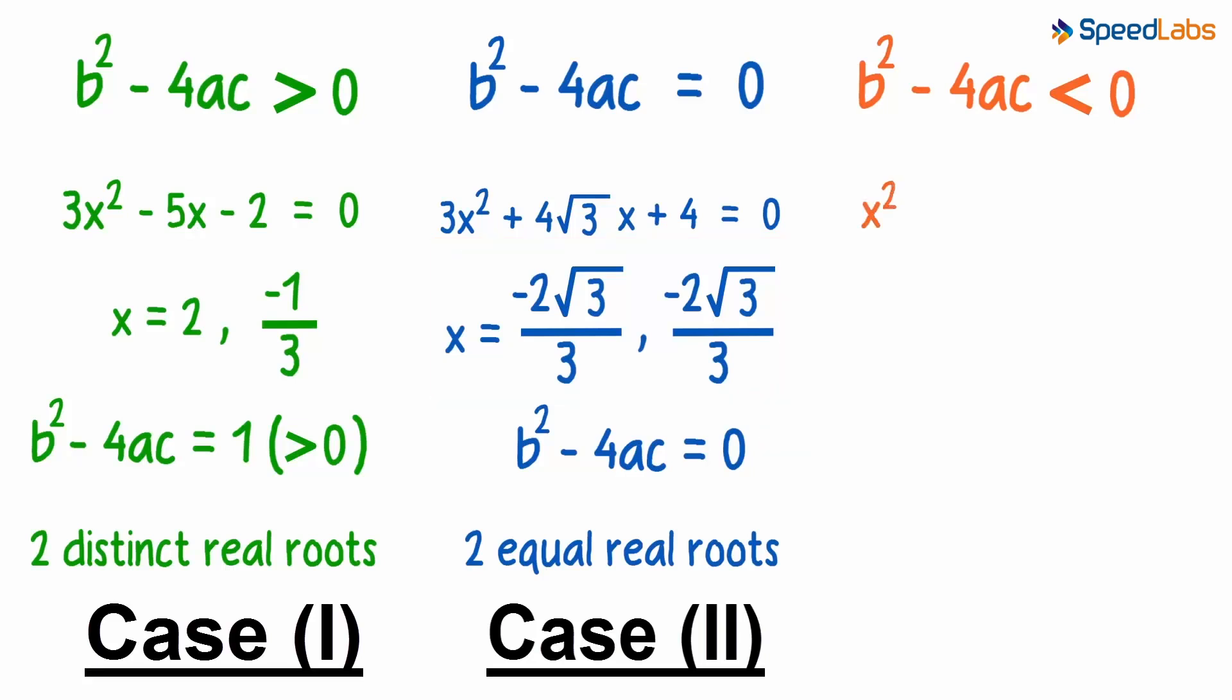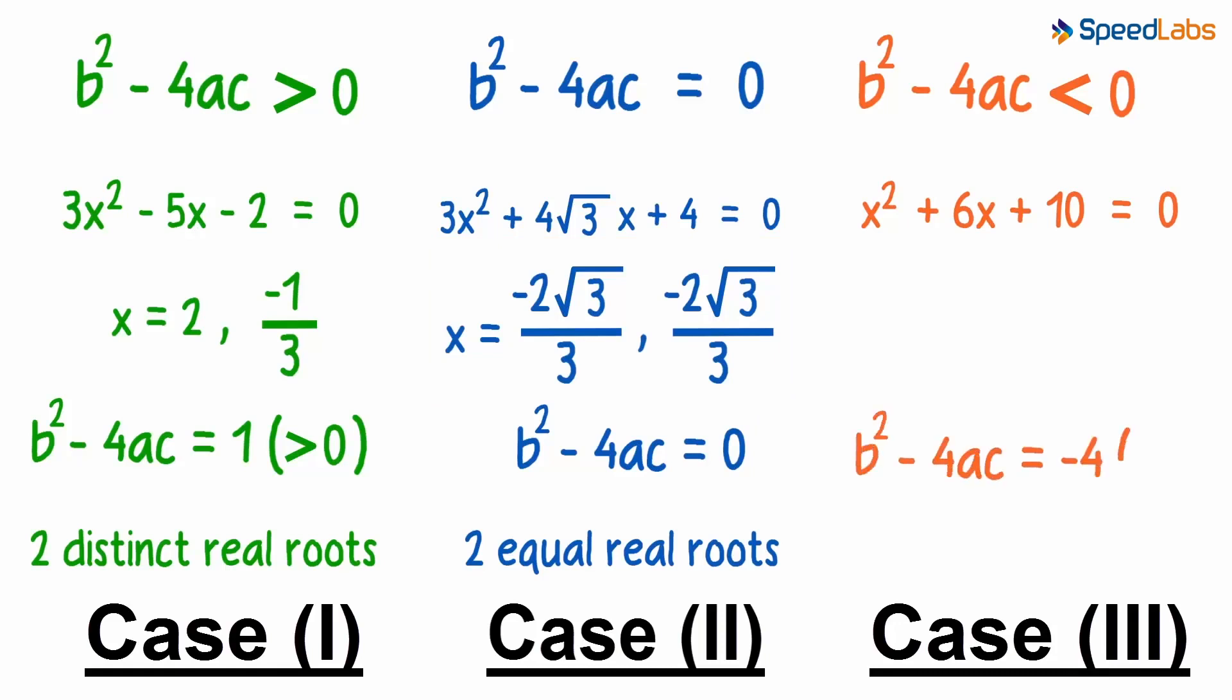And here's an example of the third case. You will see that value of b squared minus 4ac is less than zero. As there is no real number whose square will give us a negative number, the real roots of this equation will also not exist.